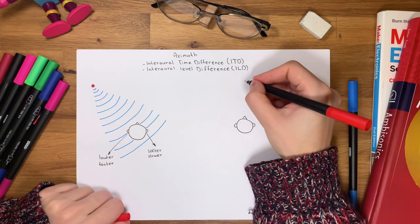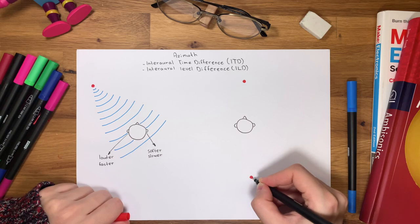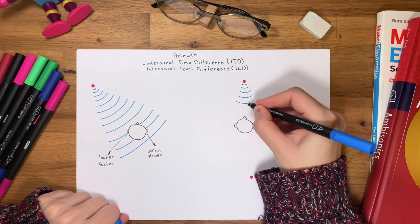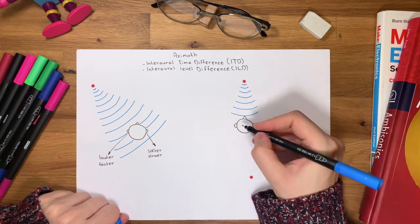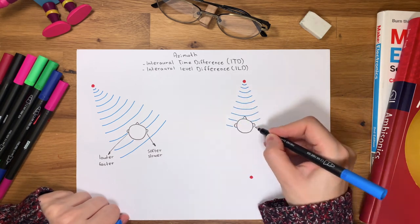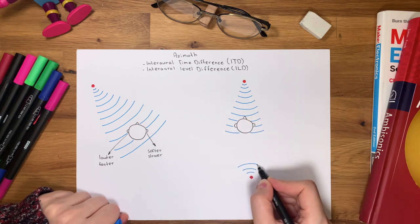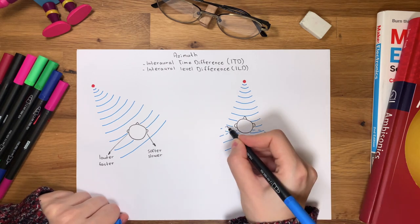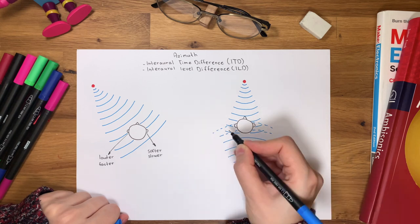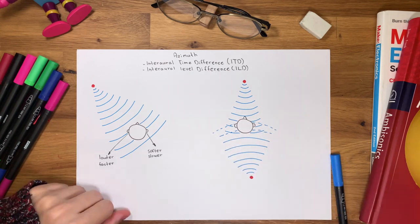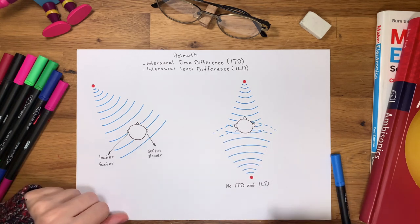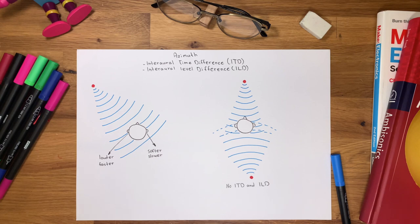If the source is located precisely in front or behind the head, there is no time or level difference between the two ears. Thus, distinguishing between the two locations is challenging unless you move your head around. Even the slightest head movement will help you to localize the sound in these positions.